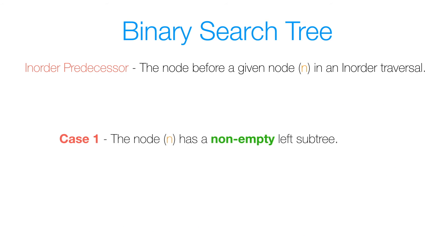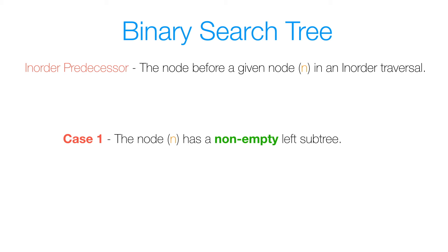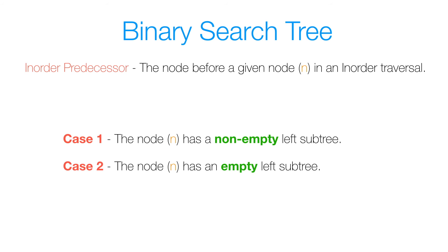Going through the tree, there were two cases to consider. The first case: if node n has a non-empty left subtree, we simply find the maximum value in that left subtree. The second case: if node n has an empty left subtree and we have parent references, we work up the tree to find the first left ancestor. If we don't have parent references, we start from the root and work down toward that node, updating our reference to the node with the closest value.